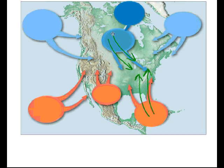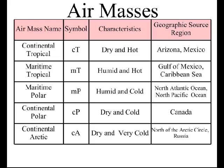In our area, we generally have about five air masses that move into our area. Those five air masses are the continental tropical, maritime tropical, maritime polar, continental polar, and continental arctic. Generally speaking, these five types of air masses — and an air mass is just a large mass of air — move around and come into our area.